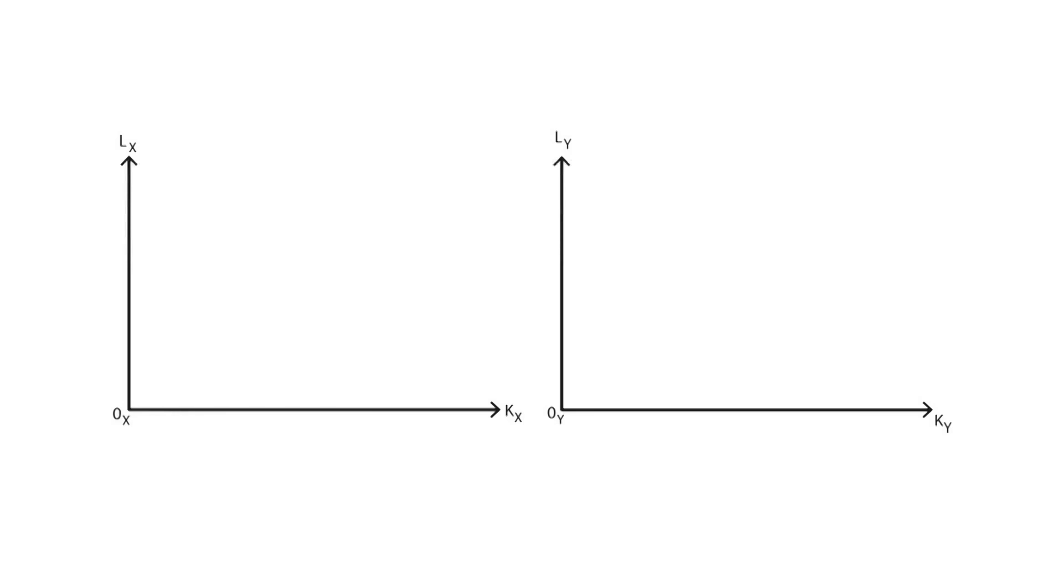These two diagrams represent the production capacity of two goods, x on the left and y on the right. The x-axis or horizontal axis shows the amount of capital K needed in the production process, while the y-axis or vertical axis shows the amount of labor L needed in the same production process.